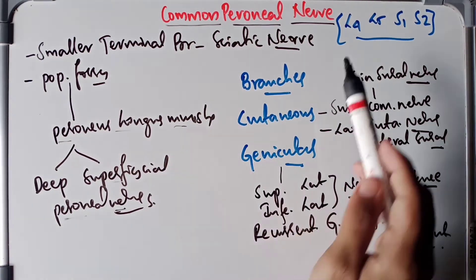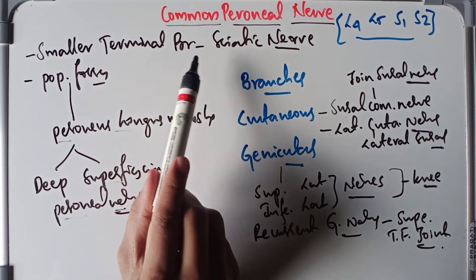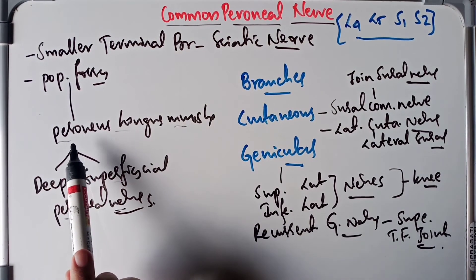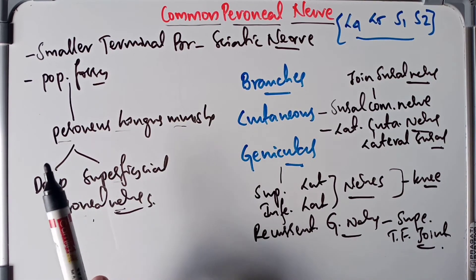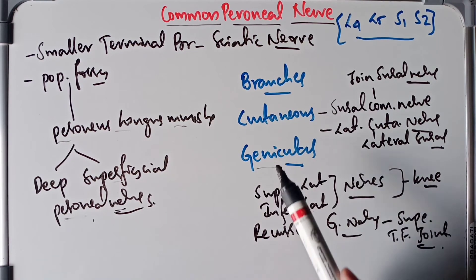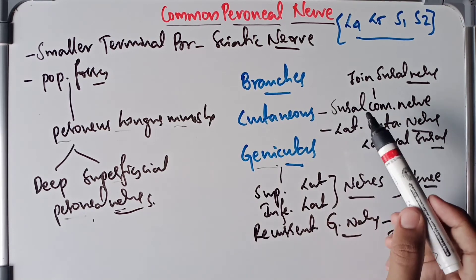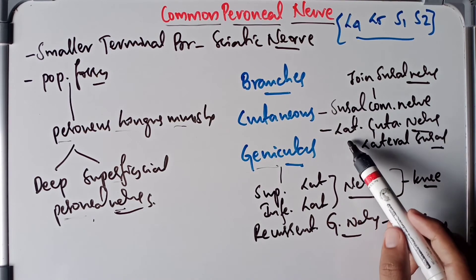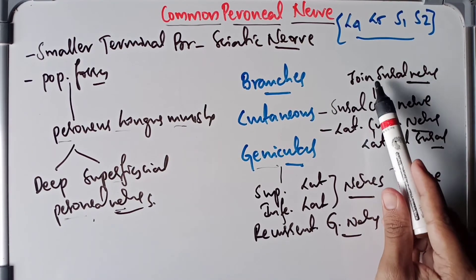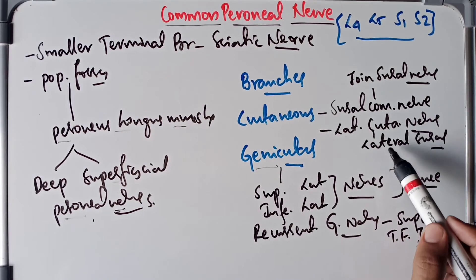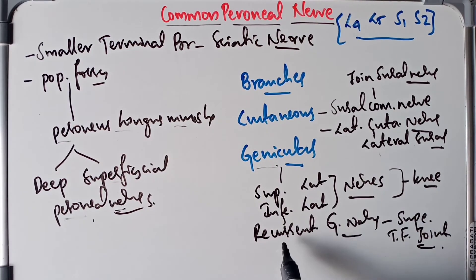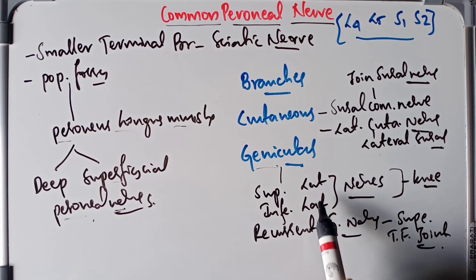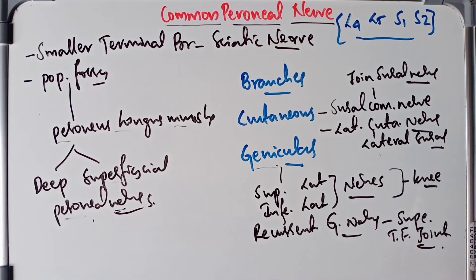In summary: the common peroneal nerve has a root value of L4, L5, S1, and S2. It is the smaller terminal branch of the sciatic nerve, arising from the popliteal fossa and, after piercing the peroneus longus muscle, dividing into the deep and superficial peroneal nerves. Its branches include cutaneous branches — the sural communicating nerve (which joins the sural nerve) and the lateral cutaneous nerve (the lateral sural nerve) — and genicular branches: the superior lateral genicular nerve, inferior lateral genicular nerve (supplying the knee joint), and the recurrent genicular nerve (supplying the superior tibiofibular joint).